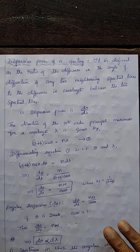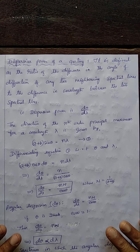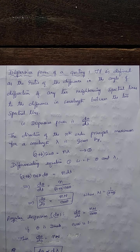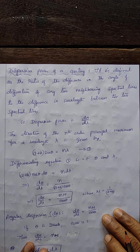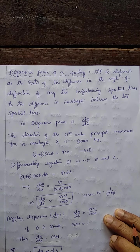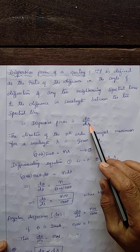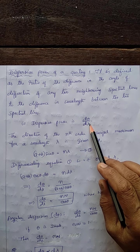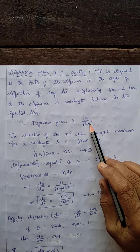Dear students, the topic is dispersive power of a grating. What is dispersive power? It is defined as the ratio of dθ to dλ, where dθ is the difference in the directions of the two neighboring spectral lines.